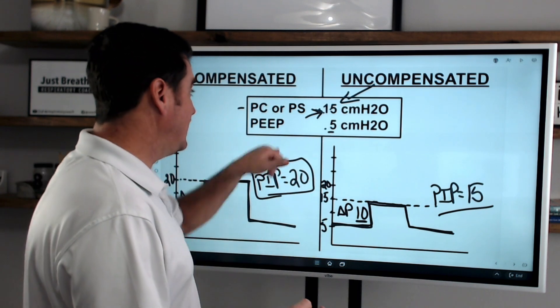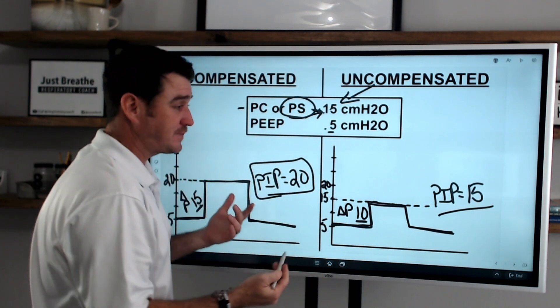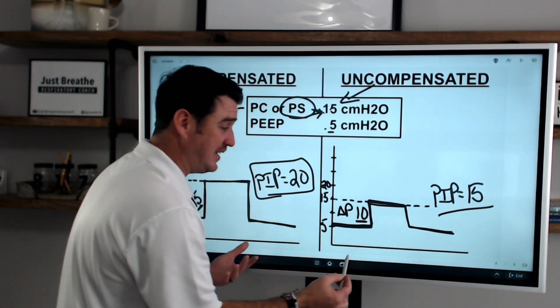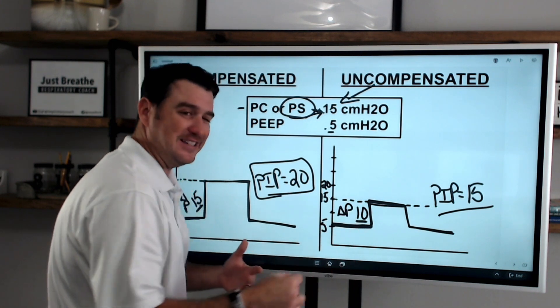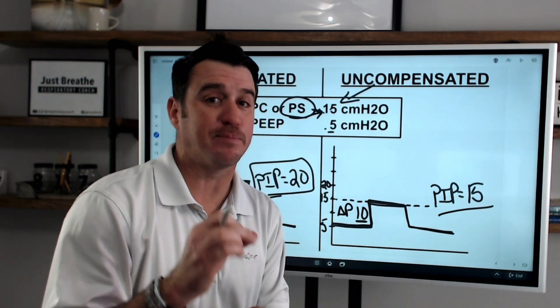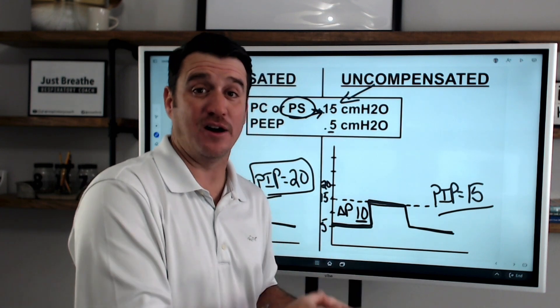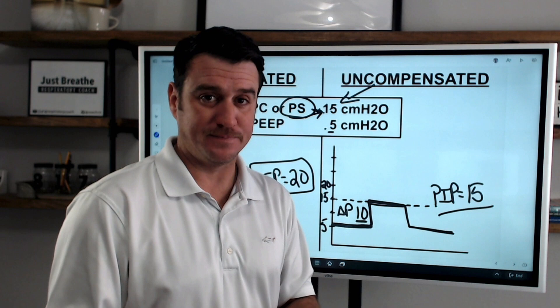Now you can do the same thing if you talk about pressure support. However, the pressure support from 5 raises to 15. So your delta P is only 10. So you really only get a pressure support of 10, not of the dialed in 15.